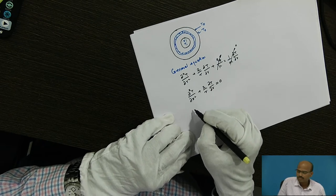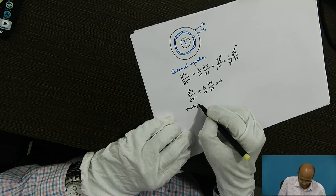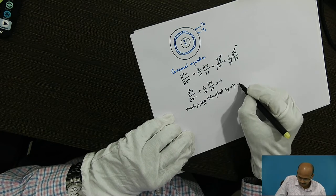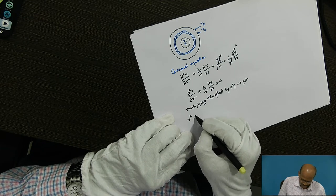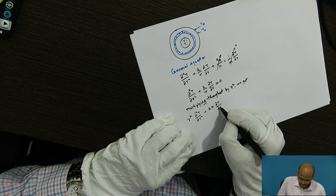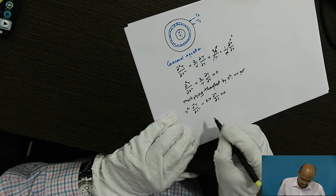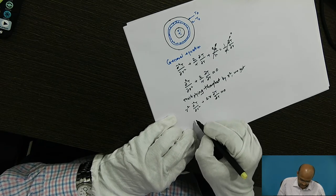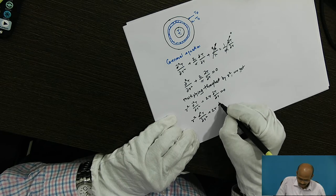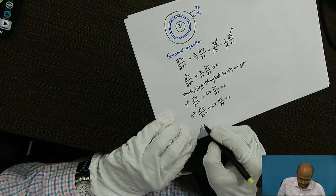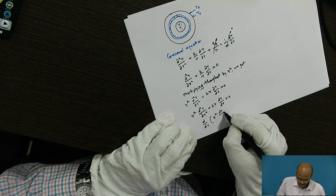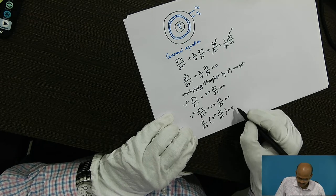Then this simplifies to ∂²T/∂r² + (2/r)(∂T/∂r) = 0. Multiplying throughout by r² we get r²(∂²T/∂r²) + 2r(∂T/∂r) = 0. As flow is in the radial direction, I can write d instead of ∂, giving r²(d²T/dr²) + 2r(dT/dr) = 0. This equation is the differentiation of d/dr[r²(dT/dr)] = 0. This is equation number 1.